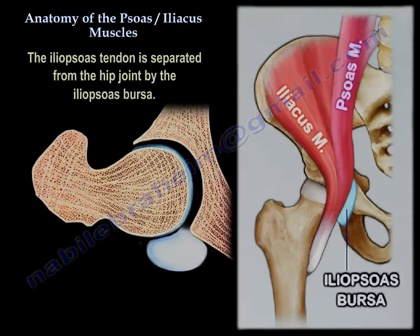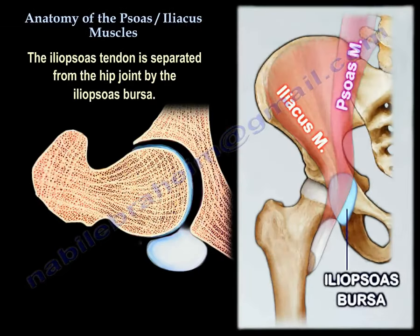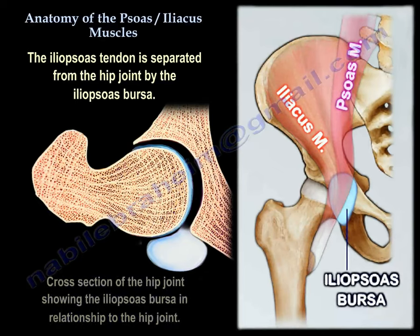The iliopsoas tendon is separated from the hip joint by an iliopsoas bursa. As you can see here, this is a cross-section of the hip joint showing the iliopsoas bursa in relationship to the hip joint.